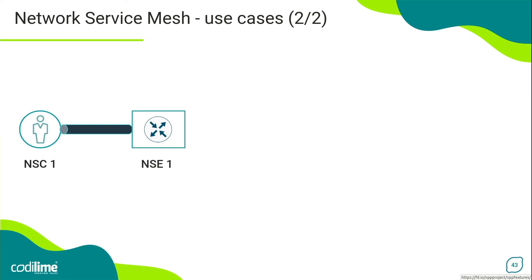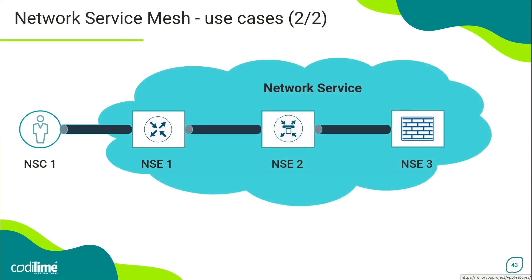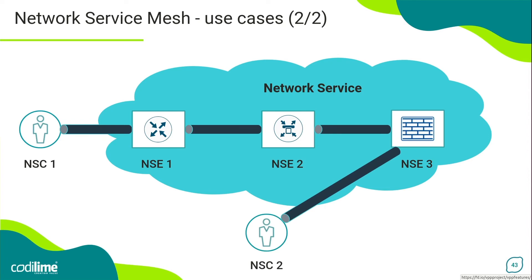NSM enables the connection of a network service client to a network service endpoint. A network service can be extended to include more than one endpoint, composing a forwarding graph — also known as service function chaining. In such a use case, the client's traffic traverses the endpoints in a defined order. For example, flows from client 1 first reach endpoint 1, which processes them, then traffic is forwarded to endpoint 2 and finally to endpoint 3. In NSM terminology, such a configuration is called a composition. It is also possible to configure a selective composition, where different clients use different sets of endpoints.